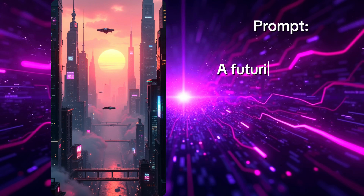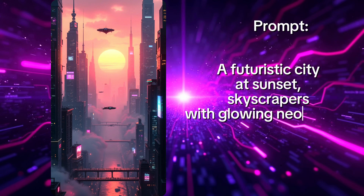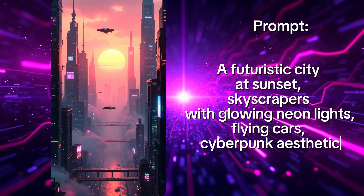Think of your prompt as the blueprint for your image. Imagine describing your dream picture to someone who's never seen it before — you need to include all the key details. Where is it? What's happening? What's the mood? Without specifics, the AI might give you something totally random. Good prompt example: 'A futuristic city at sunset, skyscrapers with glowing neon lights, flying cars, cyberpunk aesthetic.' This works well because it includes location (futuristic city), time (sunset), style (cyberpunk aesthetic), and key details (skyscrapers, neon lights, flying cars). The more details you include, the closer the image will match your vision.